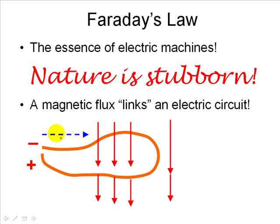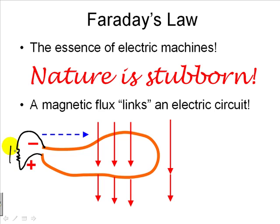No current will actually flow in this diagram because there is a gap here. But if there were some external device like a resistor, current will flow. Because the current would appear in that direction, the polarity of the induced voltage in the coil has positive at the bottom and negative at the top.